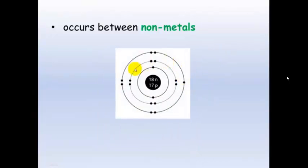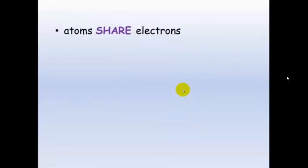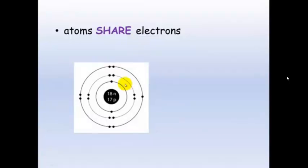Now almost all of the non-metals have full outer shells, so they only need 1, 2, 3 or 4 electrons to complete their outside shells. What these atoms do when they get together is they share electrons to get those complete outside shells.